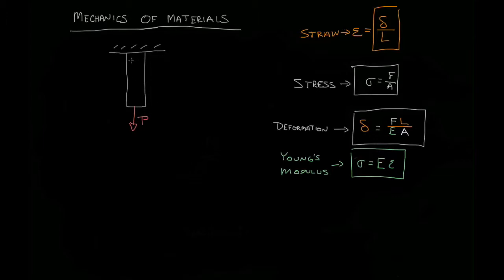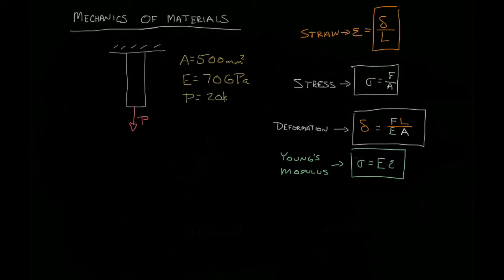We're going to apply some sort of load to this beam. We'll say that this beam has an area of 500 — maybe it's a circle, maybe it's a square. In this case, it really doesn't matter. We'll say that it has a Young's modulus of 70 gigapascals. The load that we're applying is going to be 20 kilonewtons and the length 700 millimeters. What is the deformation going to be for this problem?